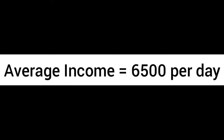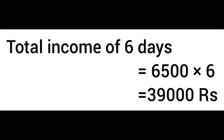Now, the average income is 6,500. That gives us the total income for 6 days. We multiply 6,500 by 6, and we get 39,000 rupees. So the total income for 6 days is 39,000 rupees.